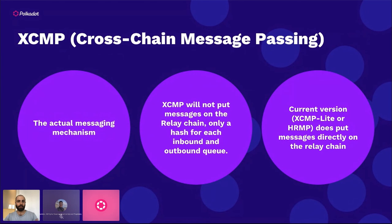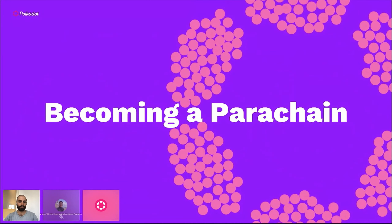XCMP — Cross-Chain Message Passing — is the actual messaging mechanism. XCMP only puts a hash of the message on the relay chain's inbound and outbound queue, not the full message. The current XCM version on Polkadot is version 2, which does not yet have the full XCMP implementation. Currently HRMP (also called XCMP-lite) is being used, which is more computationally heavy and does put messages directly on the relay chain. In the future, full XCMP will allow parachain-to-parachain message passing.